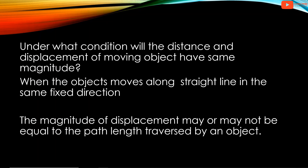Under what condition will the distance and displacement of a moving object have the same magnitude? When the object moves along a straight line in the same fixed direction, the distance and displacement will be equal. Displacement can be 0, positive, or negative. The magnitude of the displacement may or may not be equal to the path length traversed by an object.